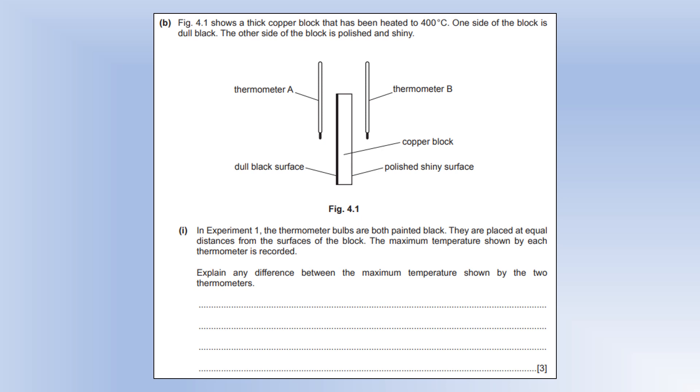The diagram shows a thick copper block that has been heated to 400 degrees Celsius. One side of the block is dull black. The other side is polished and shiny. In experiment one, thermometer bulbs are both painted black. They are placed at equal distance from the surface. Explain the difference between the maximum temperatures shown by the two thermometers. A dull black surface is a better emitter of infrared radiation than a shiny one. So thermometer A's temperature is going to rise faster, because it's going to be emitting more energy per second from the dull black surface.